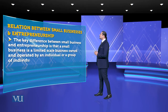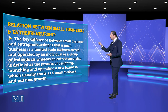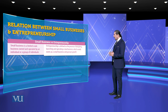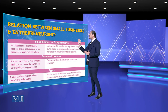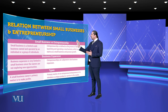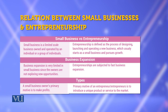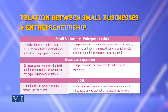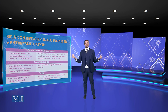The relationship between small business and entrepreneurship: entrepreneurship is defined as the process of designing, launching, and operating a new business. In small business, the owner is a sole proprietor who gets the opportunity to make profit — but the entrepreneur is subjected to fast business expansion. A small business owner's primary motive is profit. The primary motive of an entrepreneur is to introduce a unique product or service to the market — وہ آپ کو پردہ ہٹاتا ہے ایک نئی چیز سے۔ This is the key difference between small-scale business and entrepreneurship.